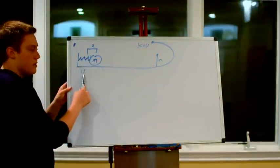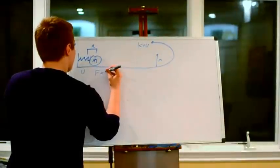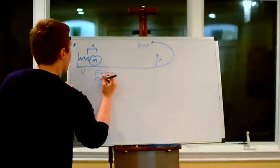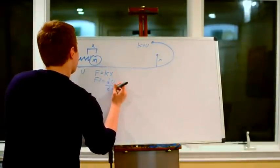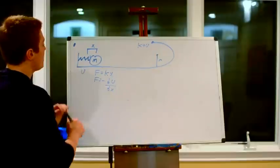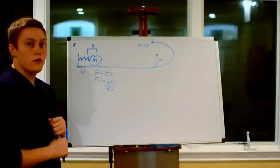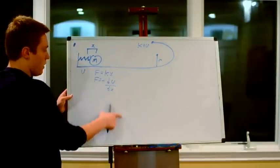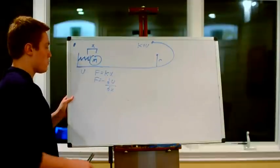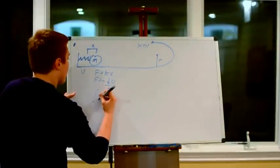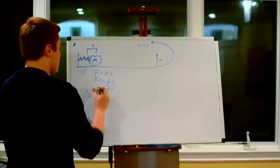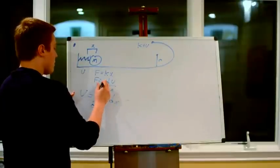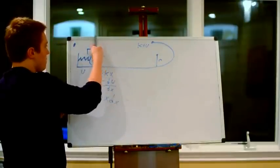We're not given the potential energy of the spring, we're given the force. But from calculus, force equals the negative derivative of potential energy. This means we need to take the integral of the force we're given. For honors physics students who haven't taken calculus, I'll give you the result, but for AP students it's important to understand this derivation. The integral of kx from 0 to x gives us potential energy, where 0 is the point of no compression and x is maximum compression.